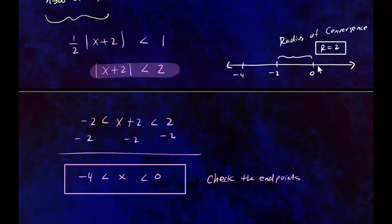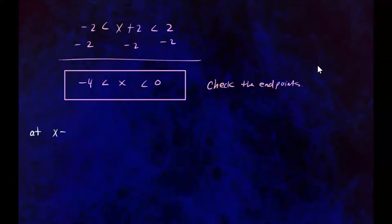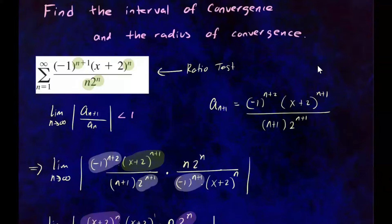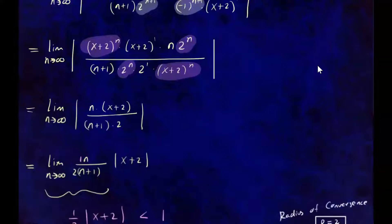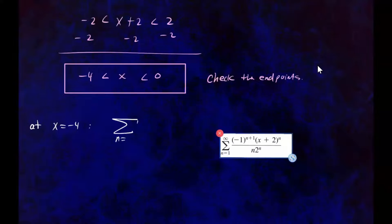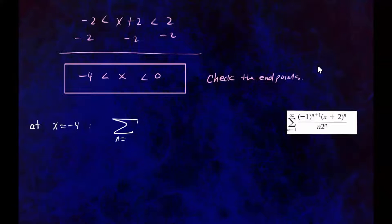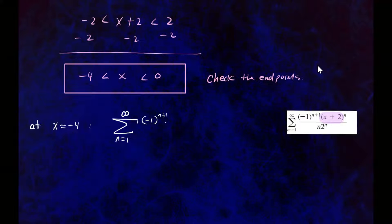Let's test the endpoints to confirm which are included. For x equals negative 4, our series becomes the sum from n equals 1 to infinity. Plugging x equals negative 4 into the original series, we get negative 1 to the power n plus 1 times negative 4 plus 2 — that's negative 2 — to the power n, over n times 2 to the n.